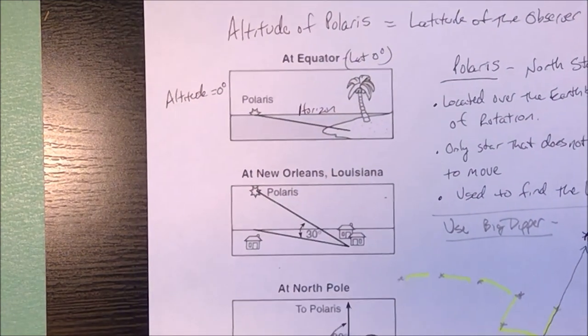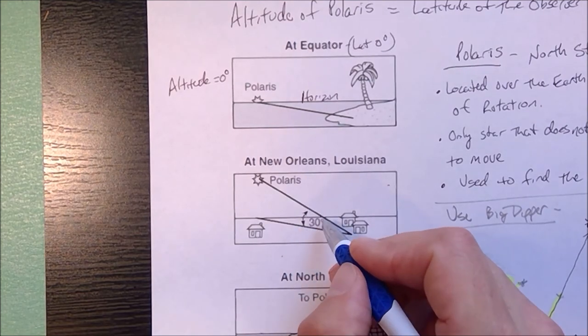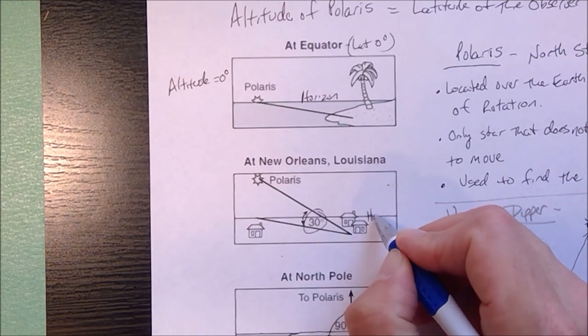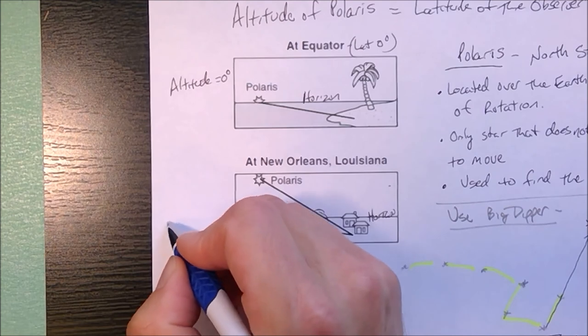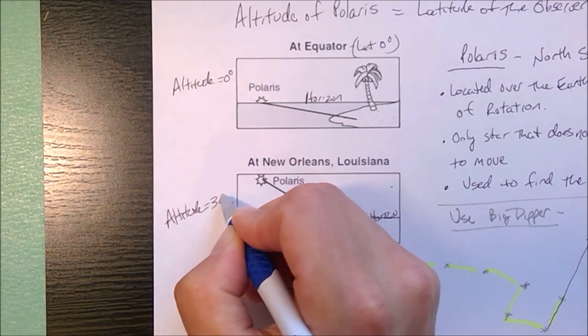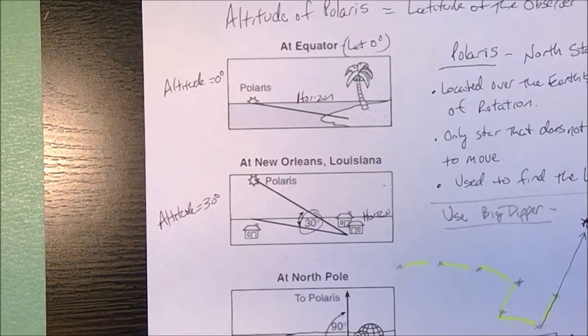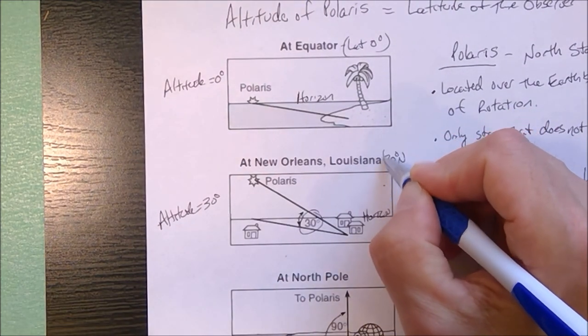You go to New Orleans. New Orleans is north of the equator. You measure Polaris and Polaris is 30 degrees above the horizon. So we would know that since the altitude is equal to 30 degrees, this would be New Orleans must be at 30 degrees north.